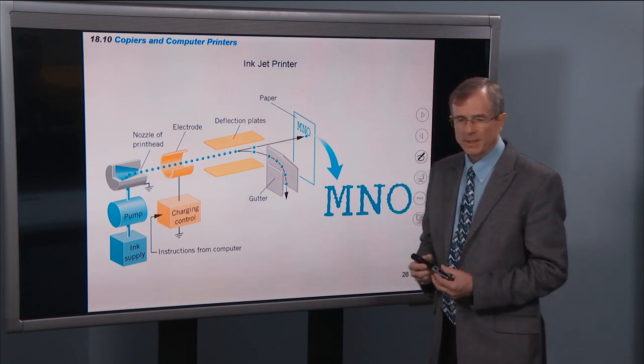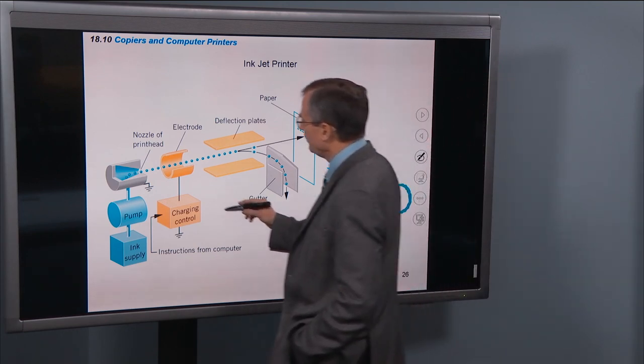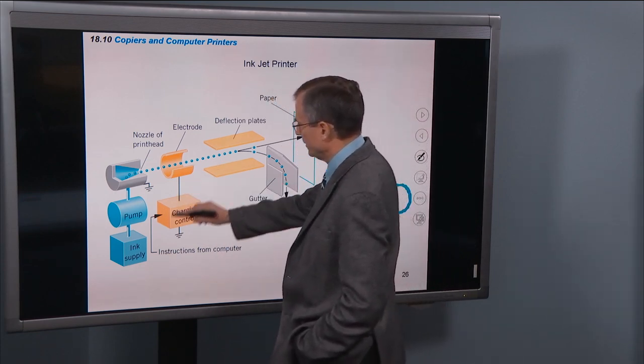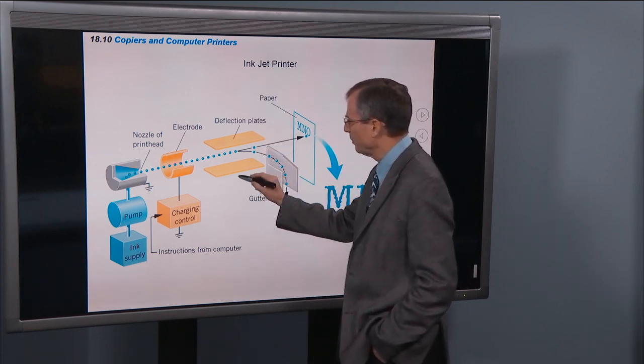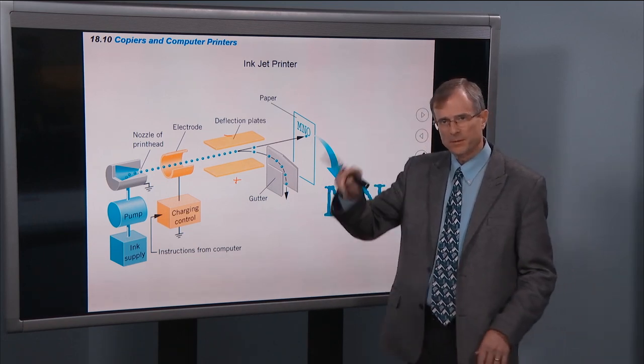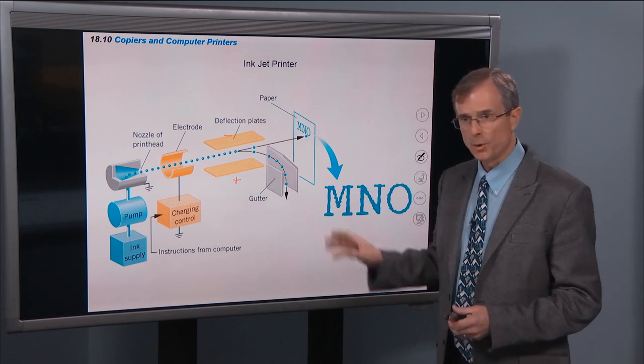Also inkjet printers, electrostatics are important here. You have charged bits of ink and they pass through deflection plates. One positively charged, one negatively charged, and that causes the droplets of ink to be deflected and form the image.